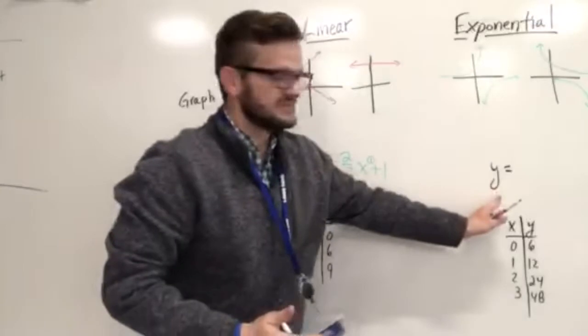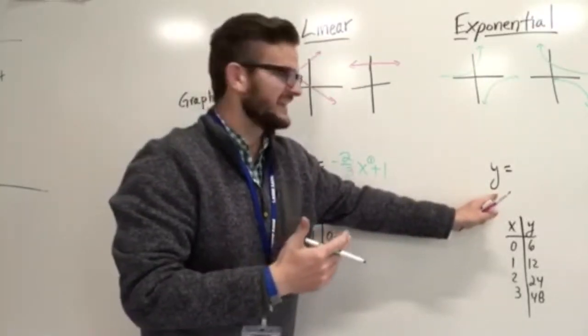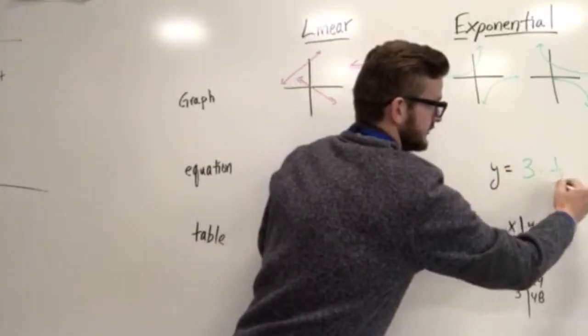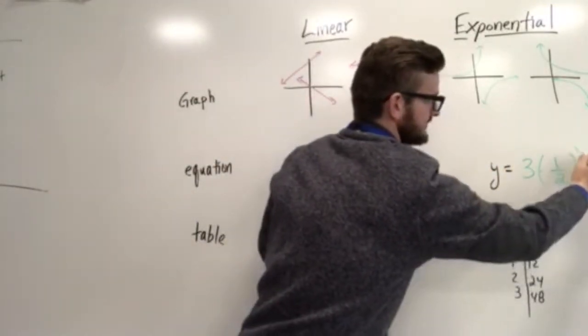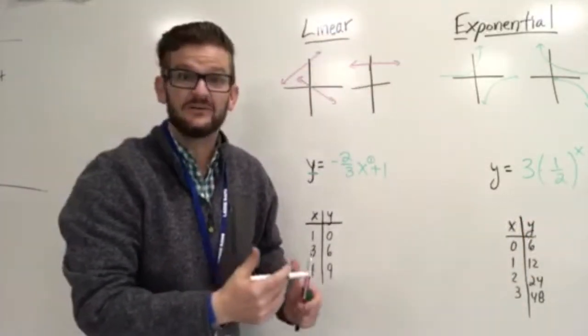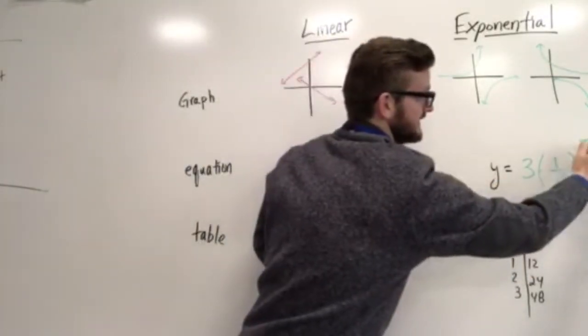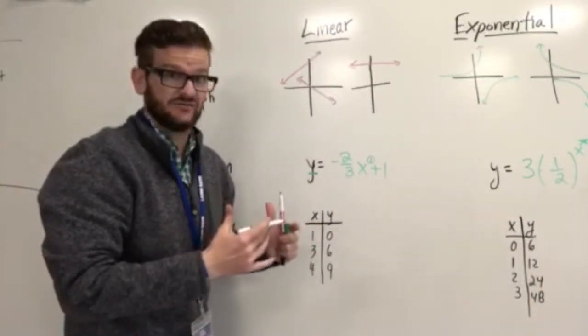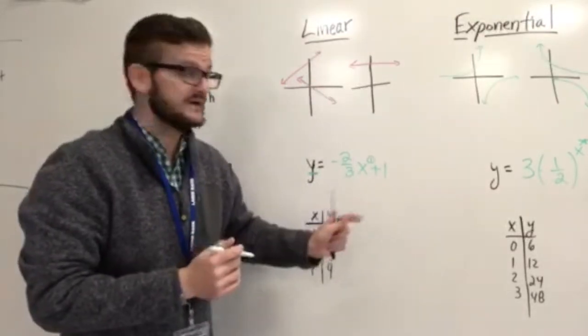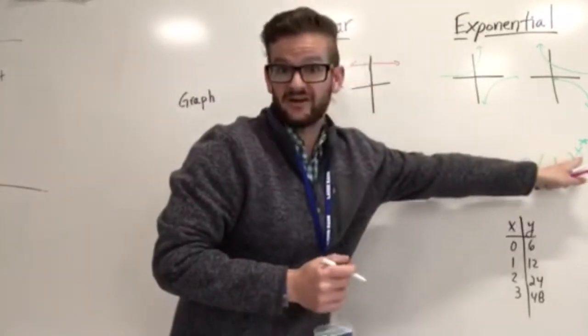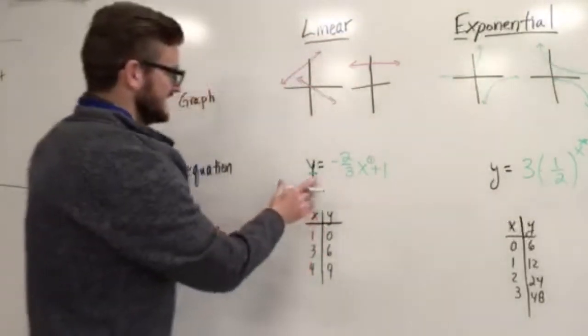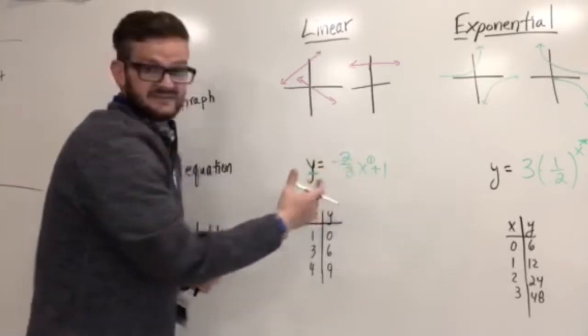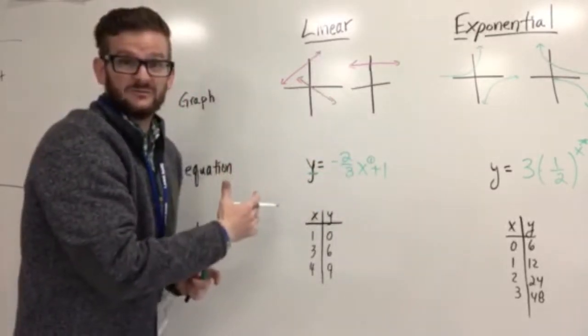With exponentials, this function is going to have an exponent and the exponent is going to be the variable. For example, 3 times 1 half and that 1 half is being raised to the x. So the variable being in the exponent is so important. That's actually what makes it an exponential function in terms of the equation. So anytime we see an equation, if it has an exponent, the variable is the exponent, it's exponential. If we solve it for y, we can pull out the slope and that means it's x to the first power. That's going to be linear.